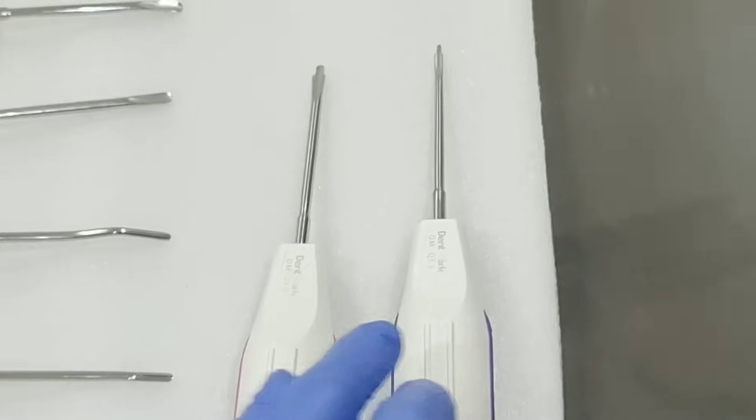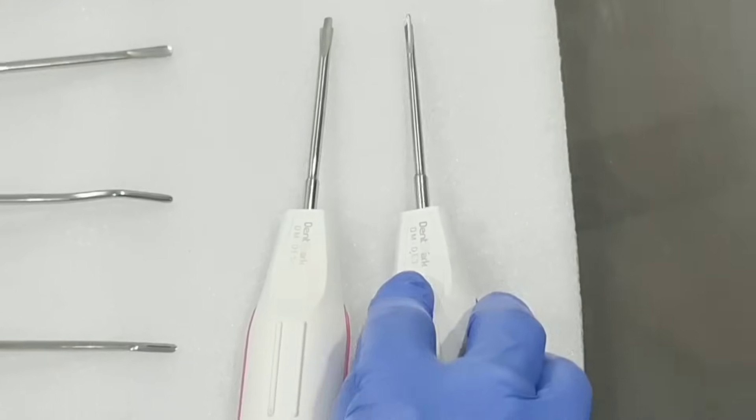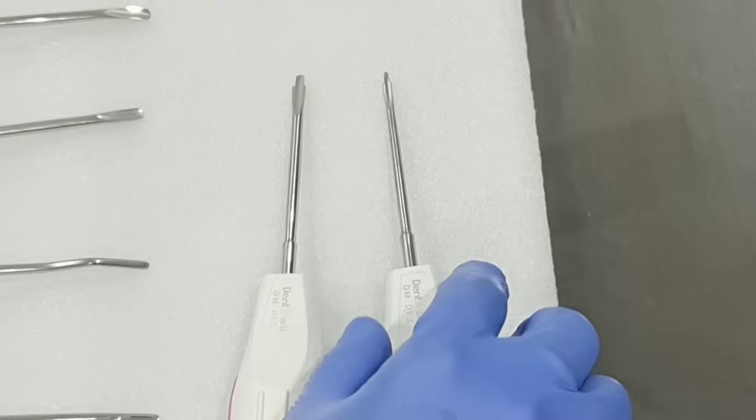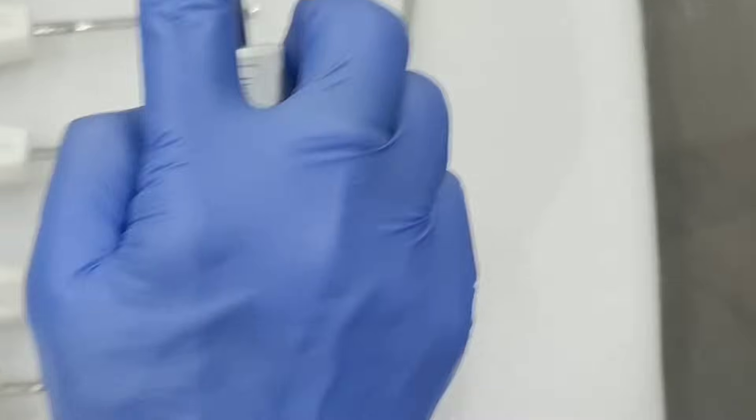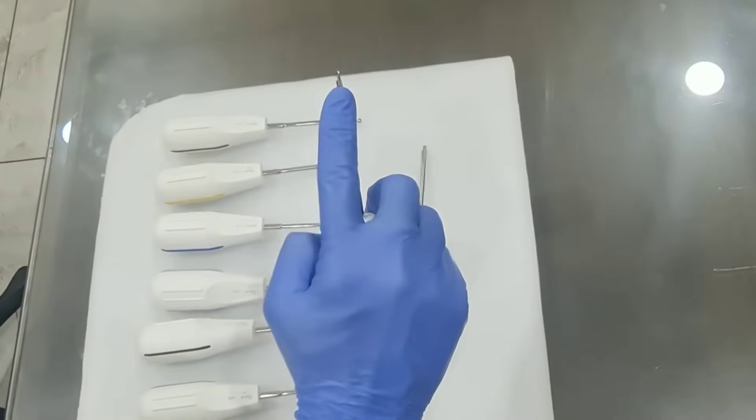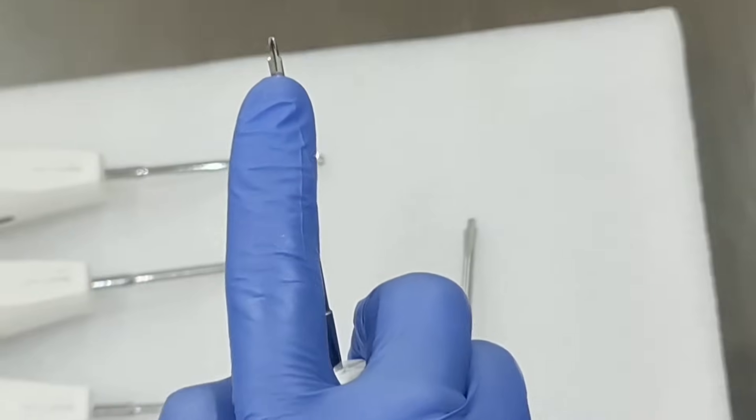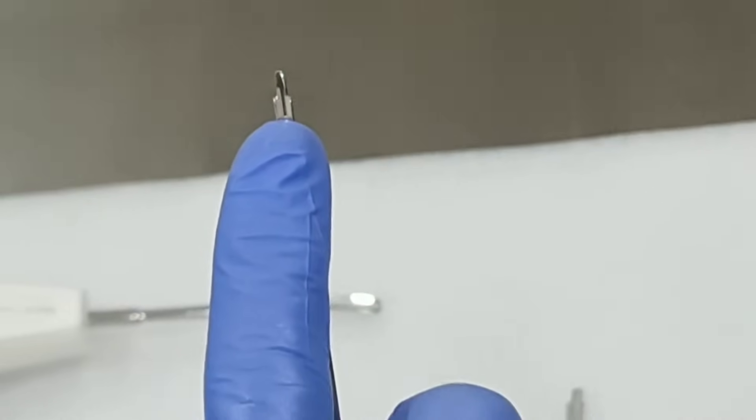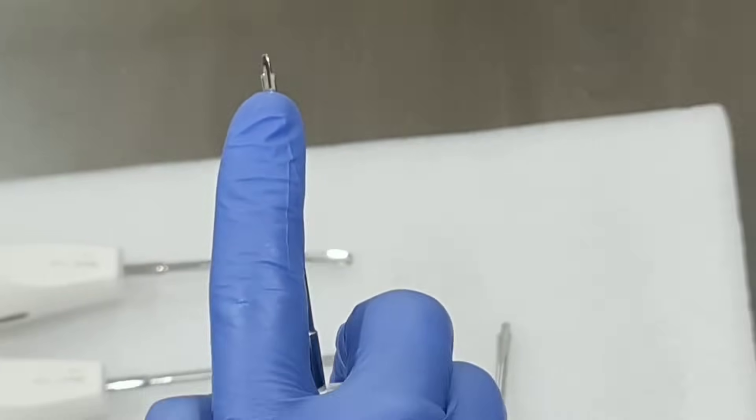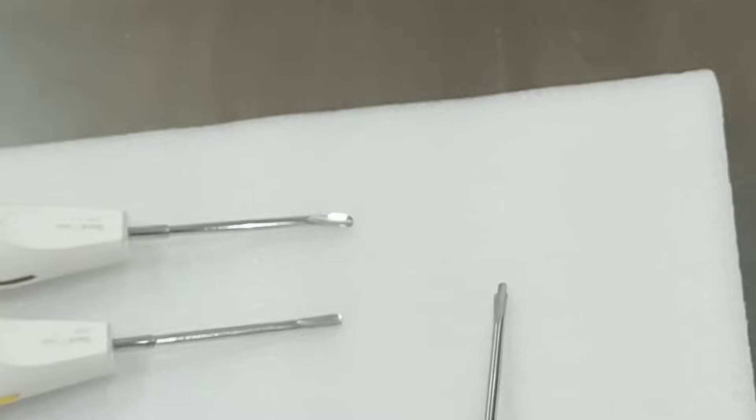So now there are two other ones, DE3 and DE5. So these are luxating dual edge periotomes. You can see DE3 is 3mm head size. It is used for difficult fractures and decayed roots.